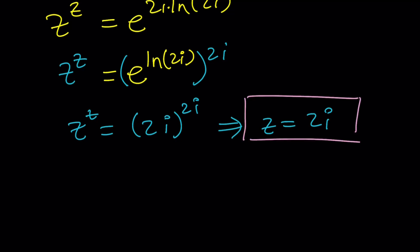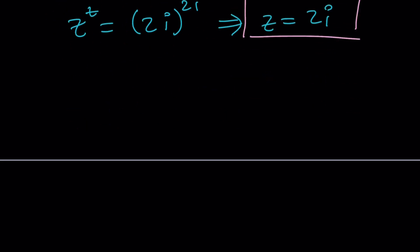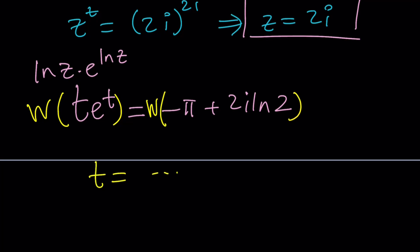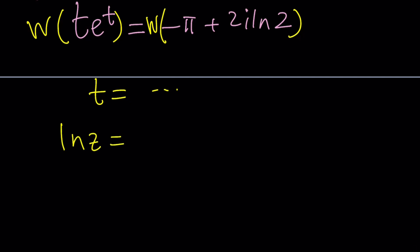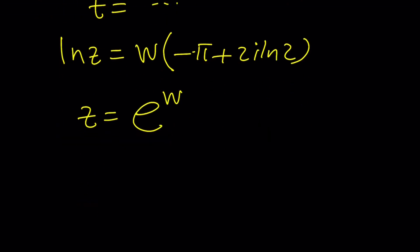Let's go back to the first method and pick it up from here. We got T e to the t. We had Z ln Z times e to the ln Z and I called it T. This was equal to negative pi plus 2i ln 2. If I Lambert both sides, I'm going to get W here and W here, and this gives me t equals that. But t is ln Z, so ln Z equals W of negative pi plus 2i ln 2. From here, Z is just going to be e to the power Lambert's W of negative pi plus 2i ln 2, the first value we started with.